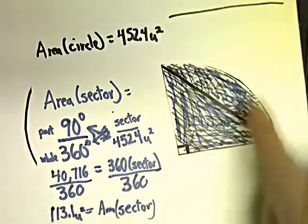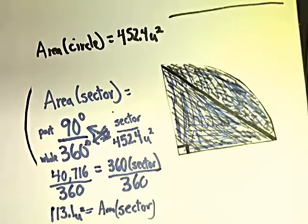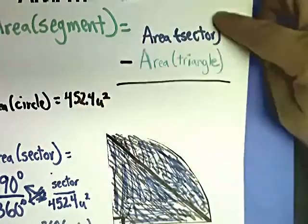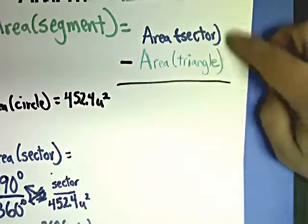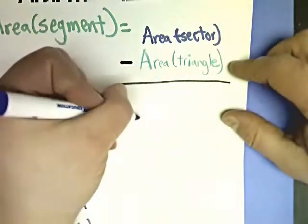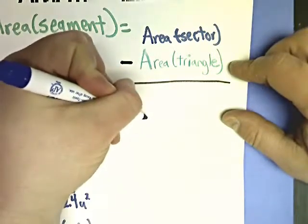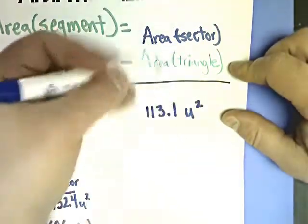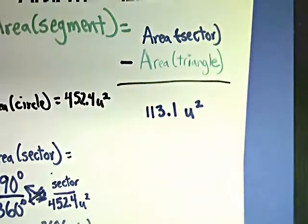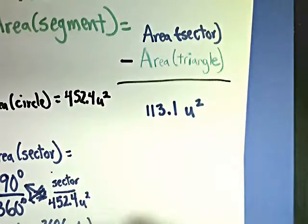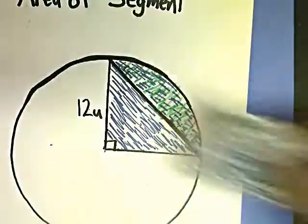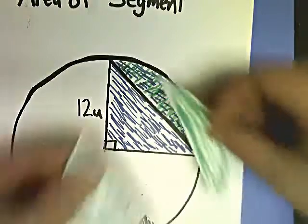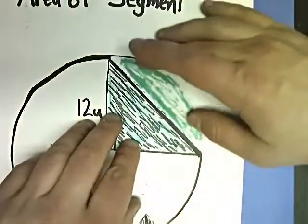So that's how I find the area of this whole sector. Going back to my formula: area of segment equals area of sector minus the triangle. My area of sector is 113.1 units squared. But that's not what the question is asking for — it's asking for area of segment. So I'm going to start looking at the segment as two parts and break it up right at the core.